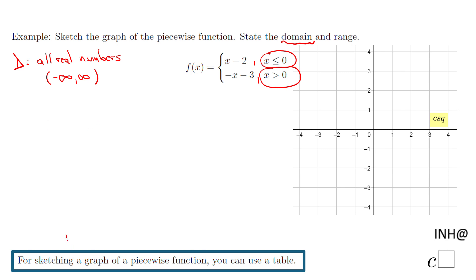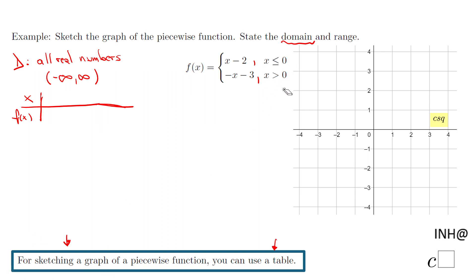For sketching the graph, we'll use a table — I think that's the best approach for a piecewise function. I'll set up x and f(x) columns. The key is to identify the dividing point, which is x equals 0. At the left of zero we use the first equation, at the right we use the other. I'll put zero twice in the table, once for each piece.